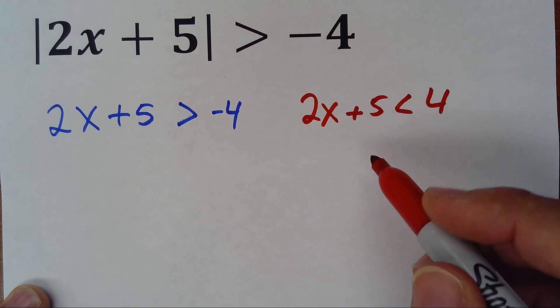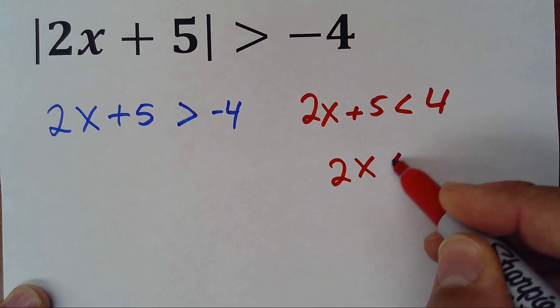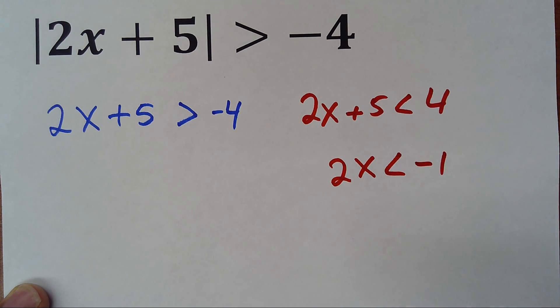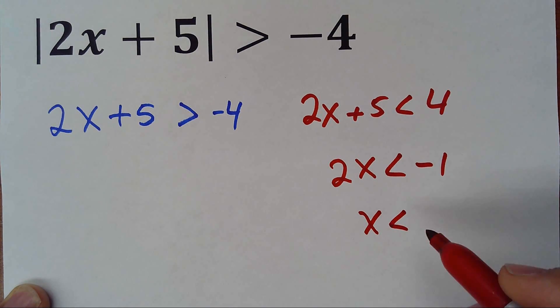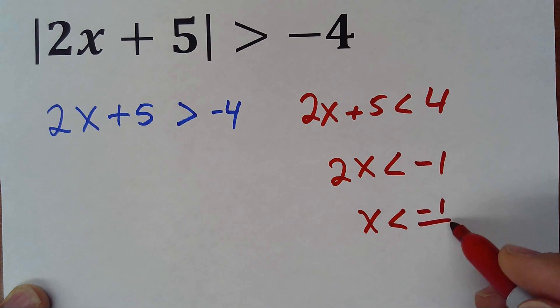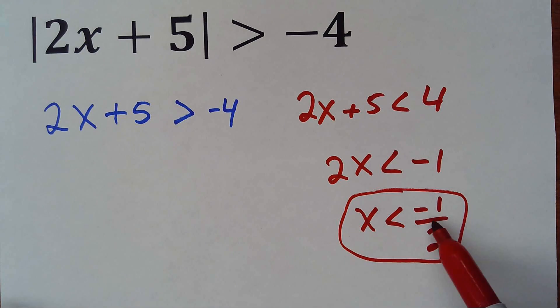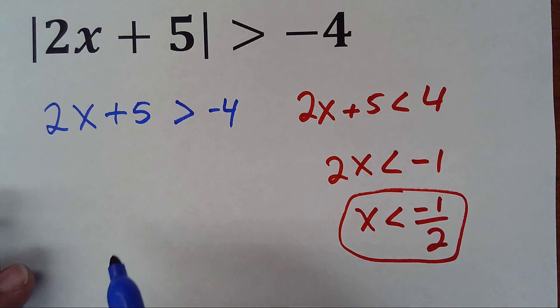So here what you do is you solve normally as you know how to do it. Positive 5 becomes negative 5 on the other side, so 2x is less than 4 minus 5, which is negative 1. And then x is less than negative 1 divided by 2. So all the numbers less than negative 1 half will be a solution for that one.